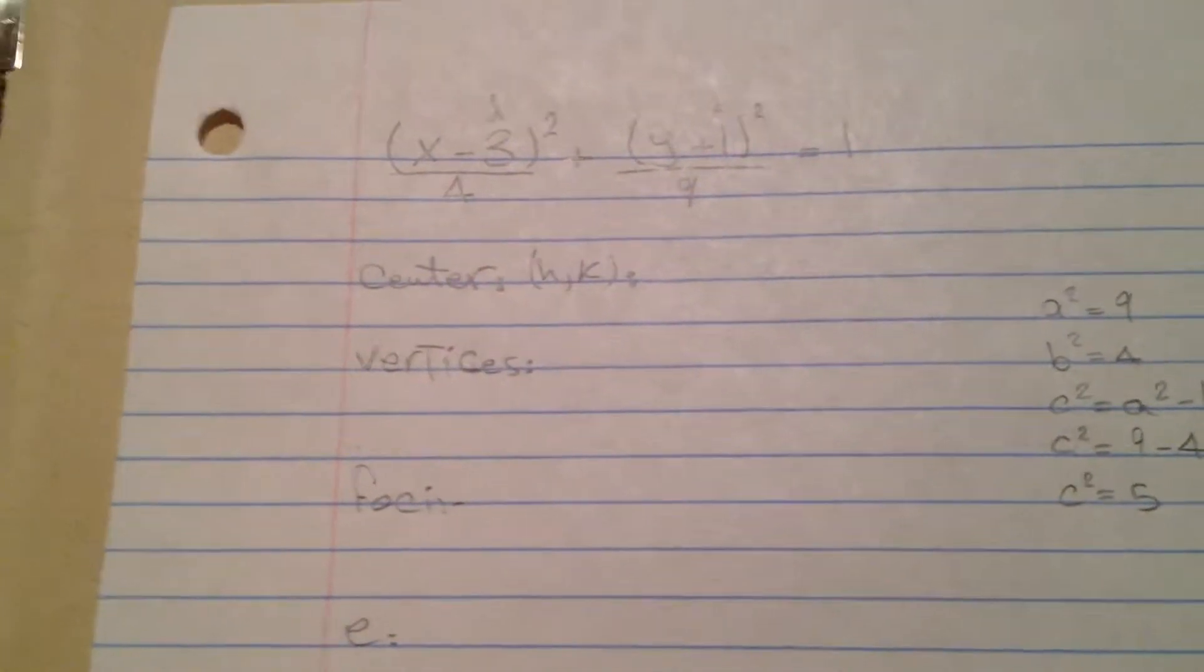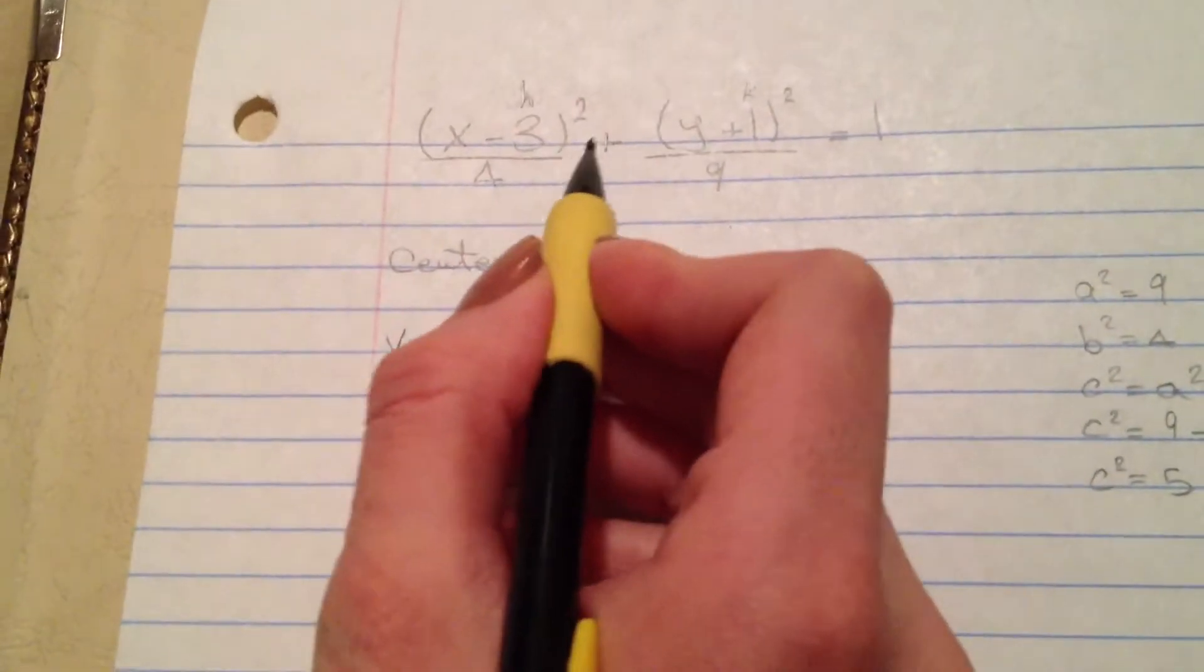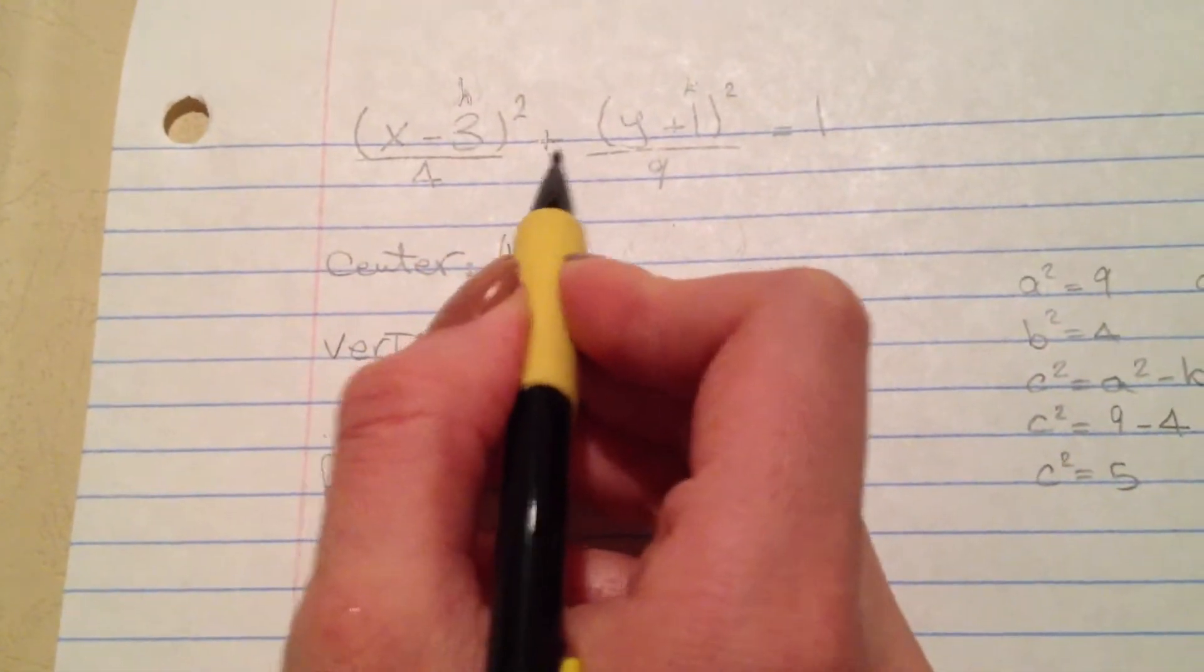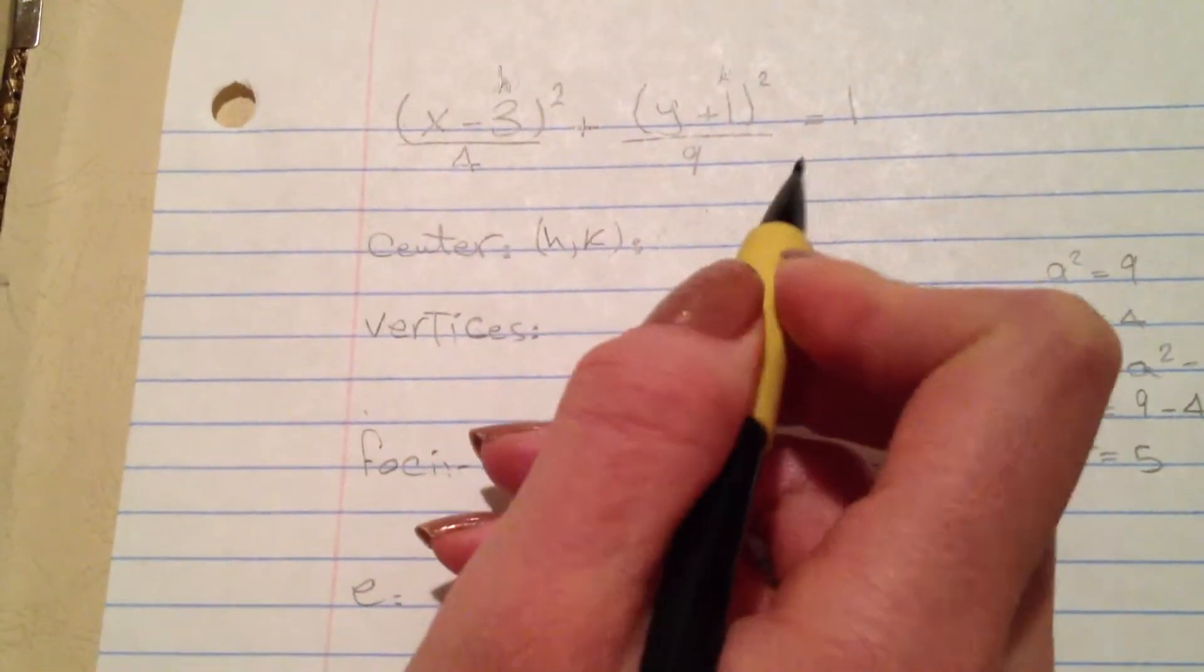Today we have the equation of the ellipse which is x minus 3 squared divided by 4 plus y plus 1 squared divided by 9 equal 1.